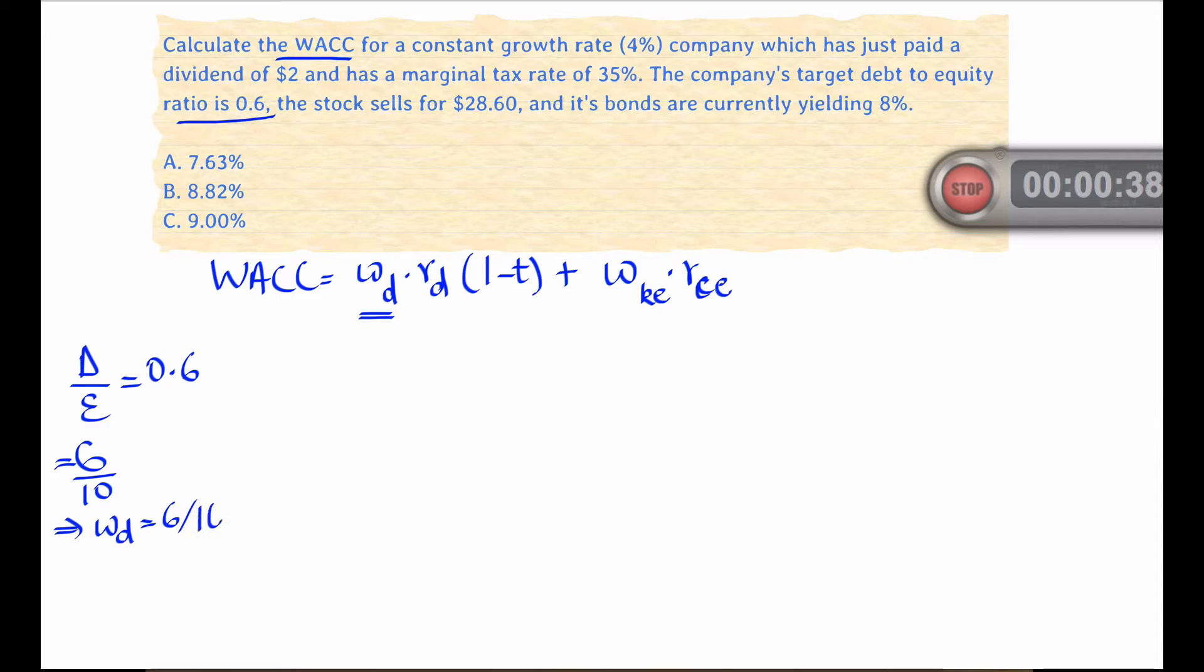What a D/E ratio of 0.6 means is that for every six parts of debt there are 10 parts of equity, which means that the weight of debt is six parts of 16 total parts and of course the weight of equity is 10 parts of 16 total parts.